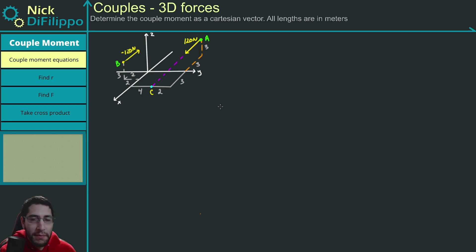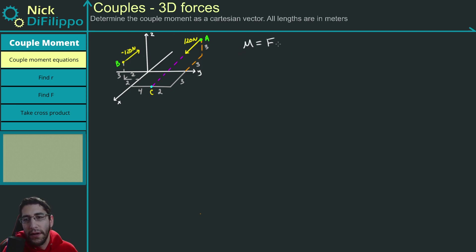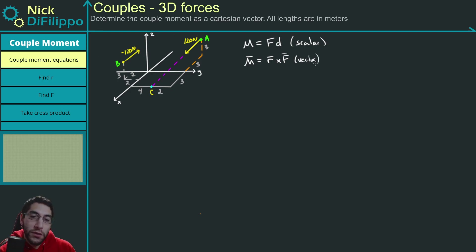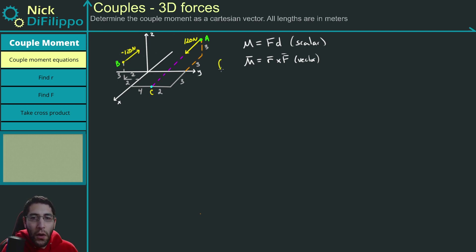Now we know the problem setup. Let's look at the equations we can use. The moment is equal to a force times a distance — that's the scalar equation. The other equation is the vector equation where the moment equals R cross F. This particular problem is in 3D, so I always go with the vector equation.